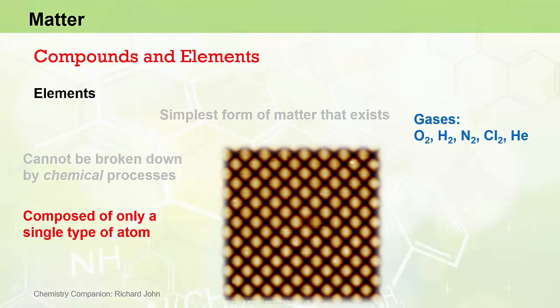The diatomic gases oxygen, hydrogen, nitrogen and chlorine and the monatomic gas helium are examples of elements that are gases at room temperature and pressure. Mercury and bromine are examples of elements that are liquids at room temperature and pressure. And carbon, sulfur, sodium, gold, copper and chromium are elements that are solids at room temperature and pressure.